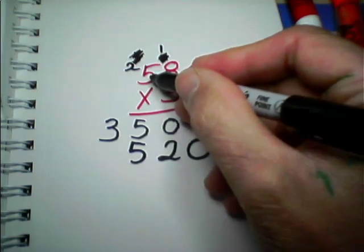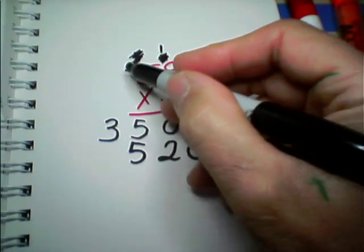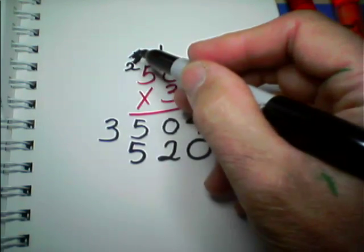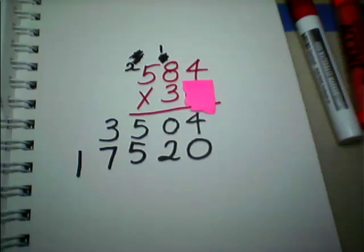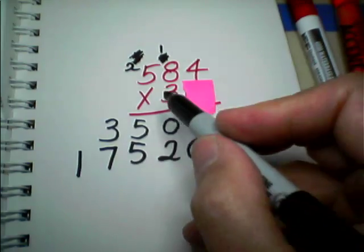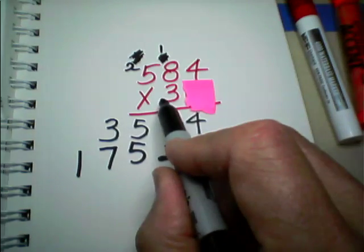3 times 5 is 15. 15 plus the 2 that's resting is 17. So, I write down the 17 right there. And now, that should be my answer to 584 times 30. It should be 17,520.